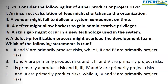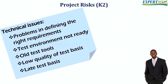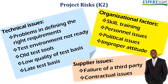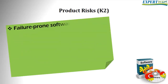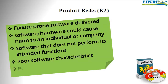Question 29. Consider the following list of either product or project risks. Before looking at the options, the rule to answer such a question is simple: if the event could happen at the software company while creating the software, then it's a project risk. But if the event could happen at the customer site years after delivery, then it's a product risk.